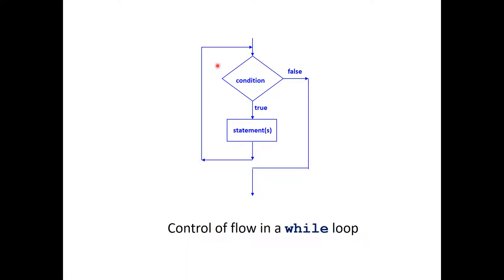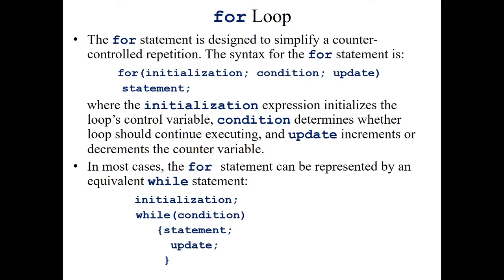To summarize the control flow of a while loop: check the condition — if false, exit the loop; if true, execute the statement, go back, check condition again; if still true, execute, go back; when it becomes false, exit. That is how the flow of control in a while loop works.